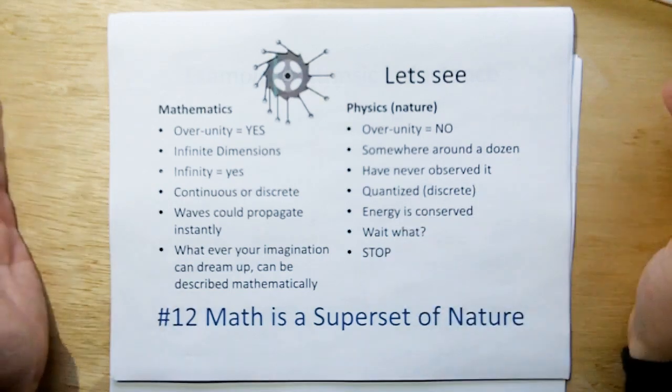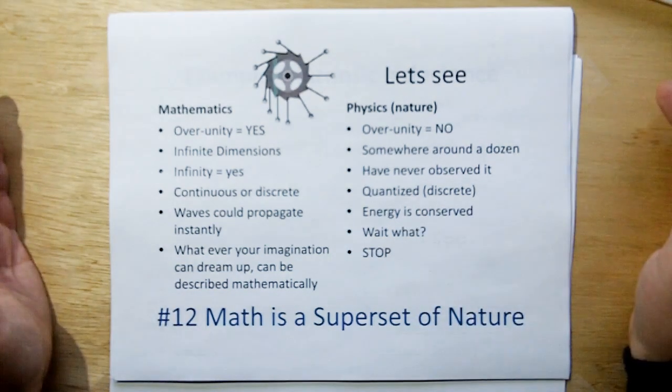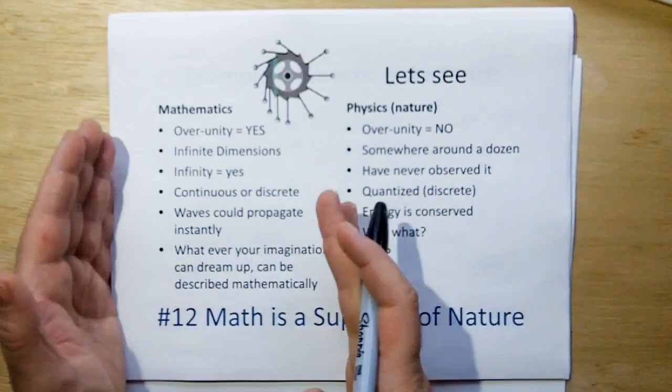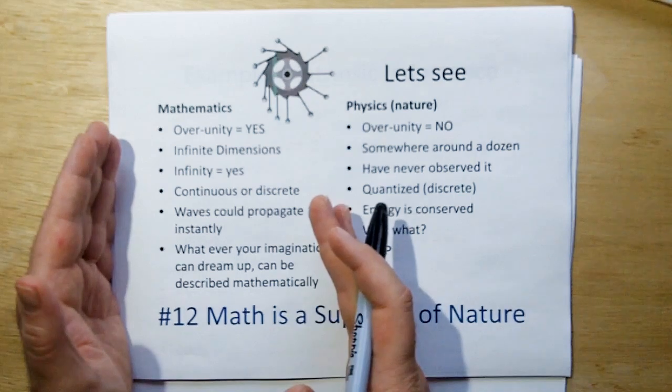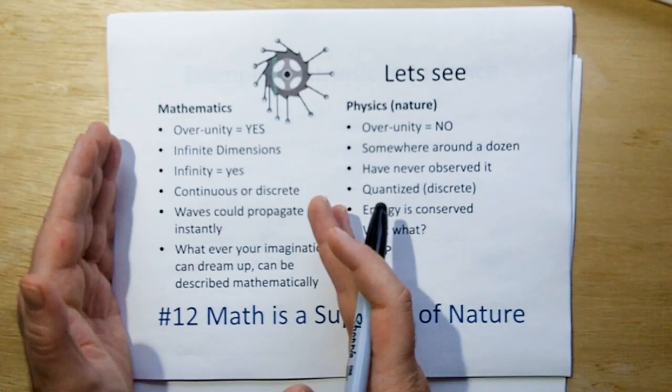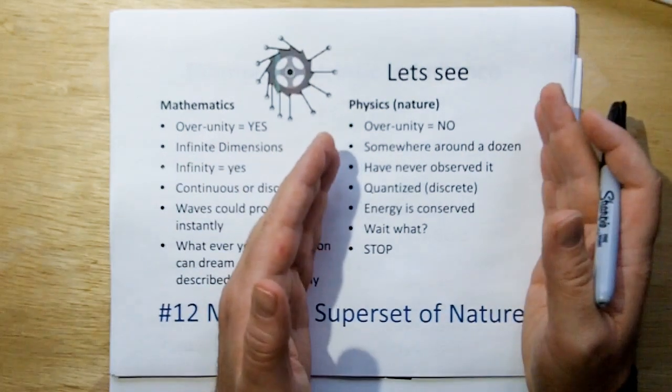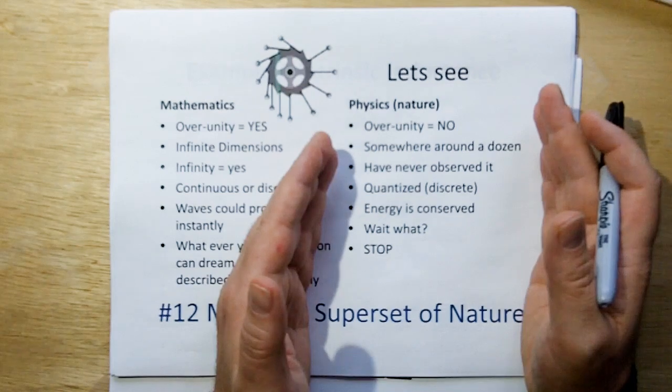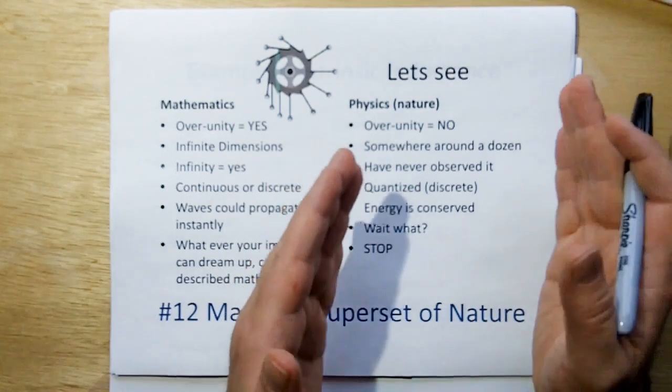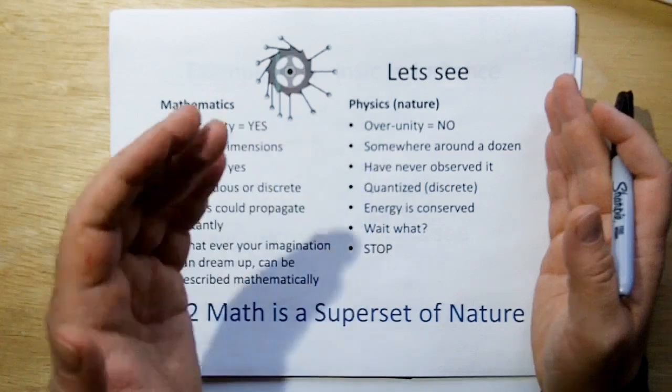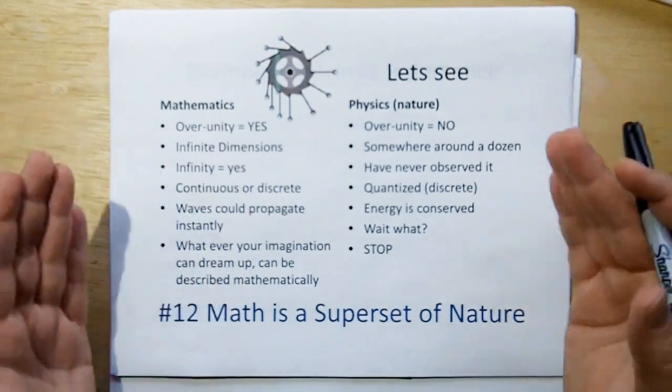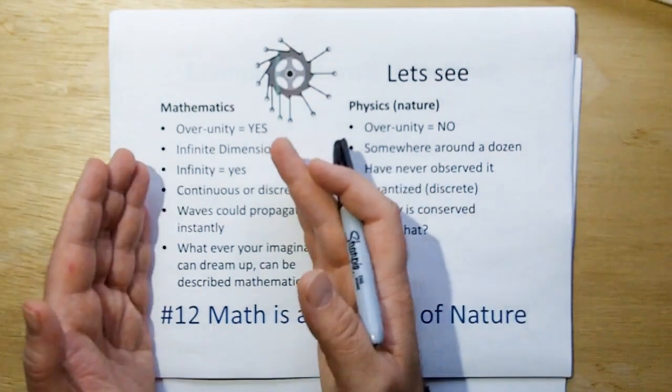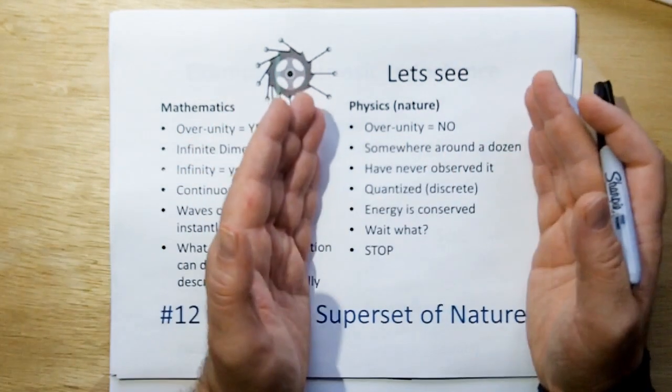And so, basically, in mathematics, you can describe anything that your imagination can dream up, but everything you can dream up doesn't happen in nature. Mathematics can follow your wishes and your dreams and your desires, and you can create whatever magical world you want. In physics, you've got limits. You can only manipulate what you can manipulate, and that's as far as your dreams are going to carry you in the real world. Therefore, we come to the ultimate conclusion that mathematics is a superset of nature, because you can describe more in mathematics than what actually occurs in the real world.